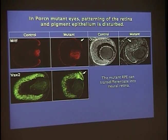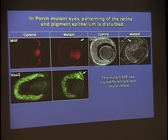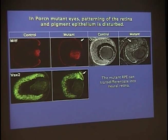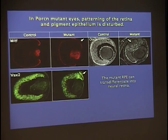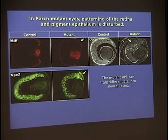When we do true tissue-specific inactivations — single disruption of porcupine in the retina only, or the RPE only, or only in the mesenchyme — we don't see transdifferentiation. This suggests that at least two tissues in combination provide Wnts that are important for RPE development. We are now doing combinatorial tissue-specific deletions, which are a little bit more difficult to get.